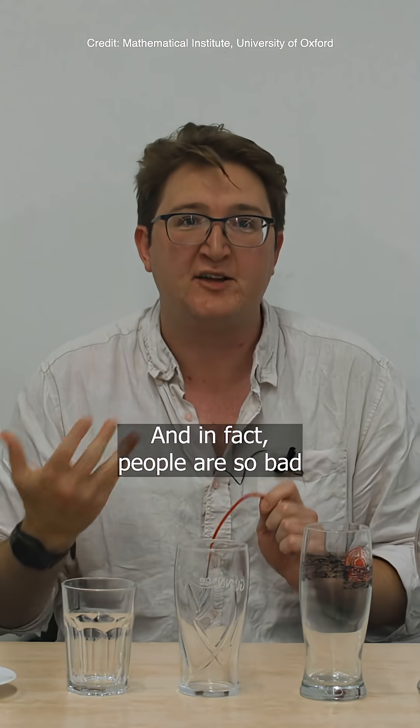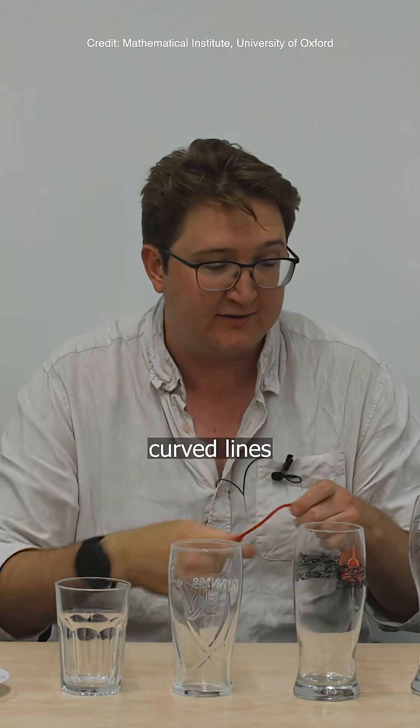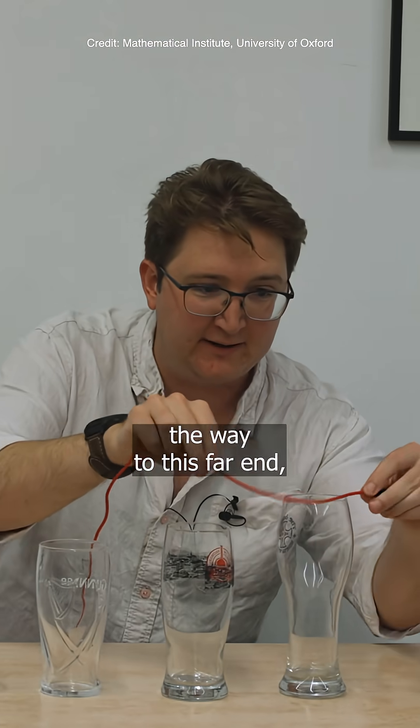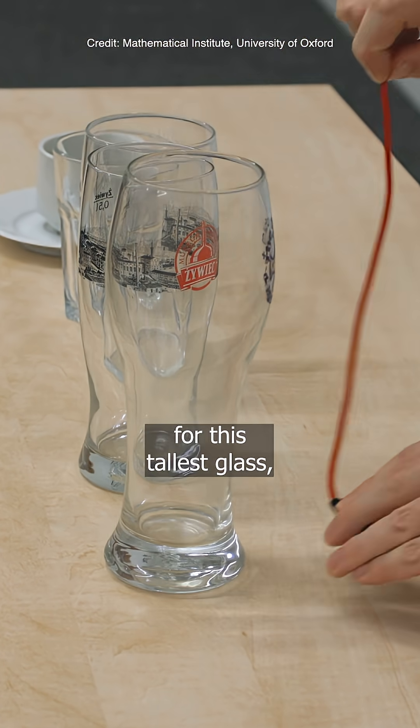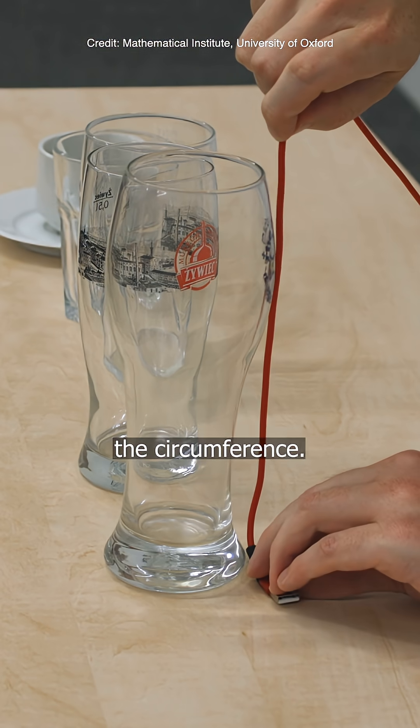And in fact, people are so bad at estimating height versus curved lines that we can go right the way to this far end and measure around the top. We'll find that even for this tallest glass, the height is shorter than the circumference.